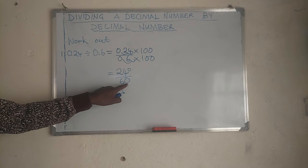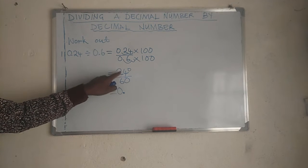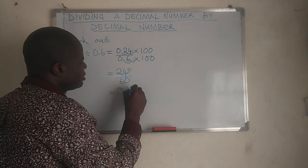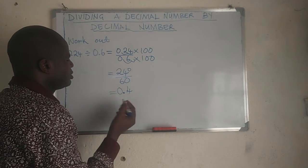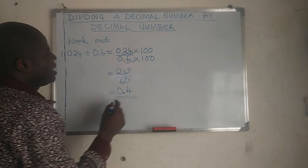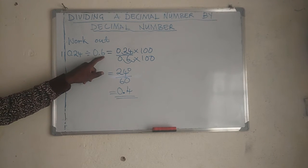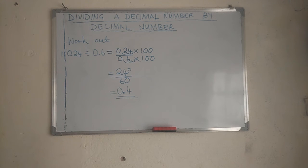Then 60 into 240 - that will go 4 times. So basically, dividing 0.24 by 0.6 gives us 0.4.